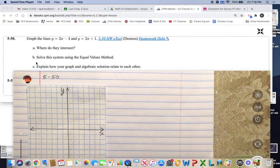And then we will also solve the system of two equations using the equal values method. And last, we'll explain how the graph and the algebraic solution relate to each other. Okay, so the first thing we need to do is go ahead and graph these two lines.